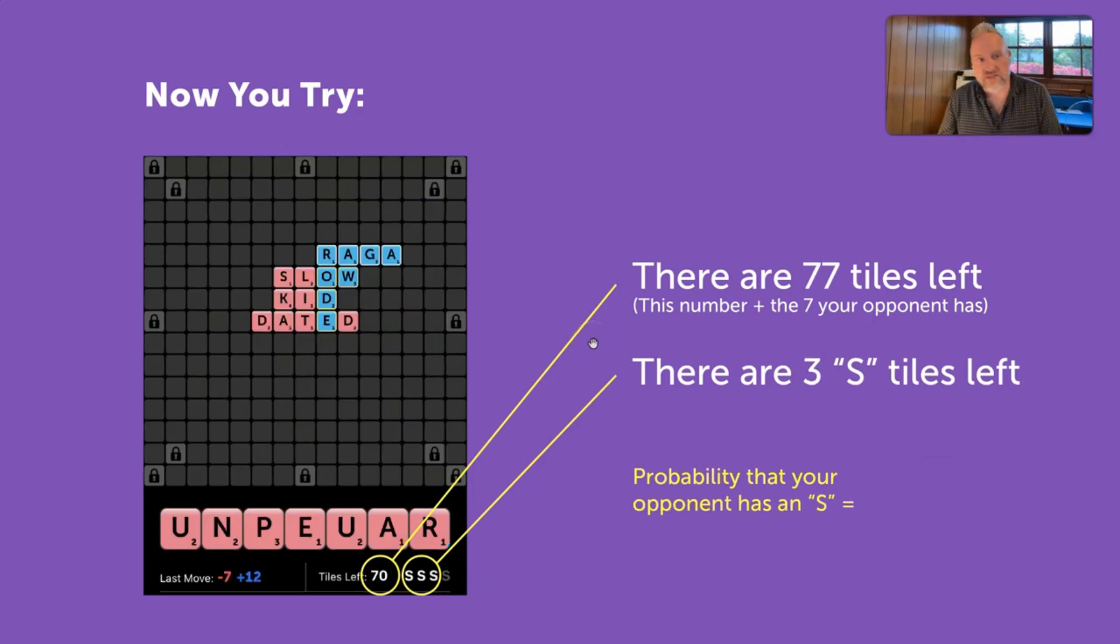Okay, now, this is not a trick question anymore. Let's try this again. There are 77 tiles left. There are 3 S tiles left. What do you think? Low, medium, high? You can pause if you want. I'll give you a second. Alright, let's take a look. 25%. So, I would say this is a medium chance. One out of four. Not bad. You might want to take a chance on playing the S thing, or a word that could be pluralized, or maybe not. But this number, I believe, is more accurate too, because there are 77. Three quarters of the tiles are still left.